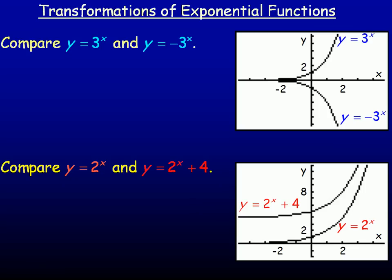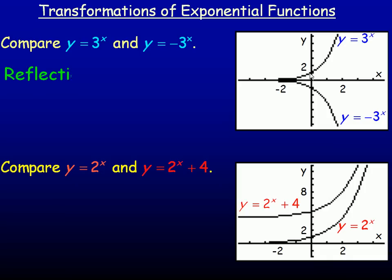We demonstrate how to work with transformations of exponential functions. Looking at the first two equations, y equals 3 to the x and y equals negative 3 to the x, the difference is the second has been multiplied by negative 1, hence the negative in front of 3 to the x. What that does graphically is it reflects the graph in the x-axis, so the two equations are reflections of each other in the x-axis.